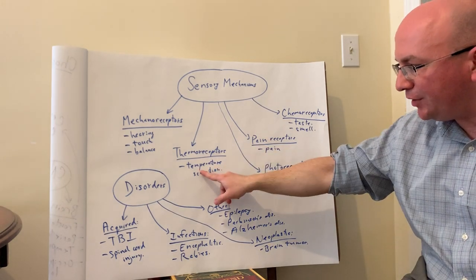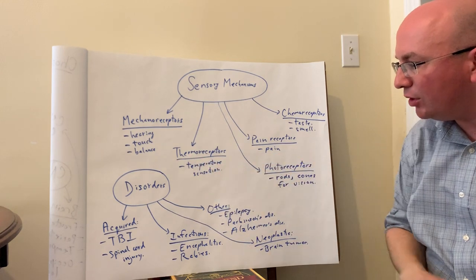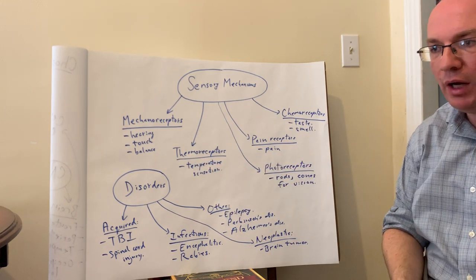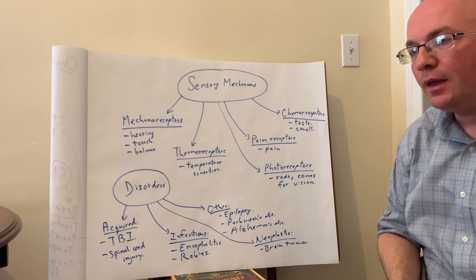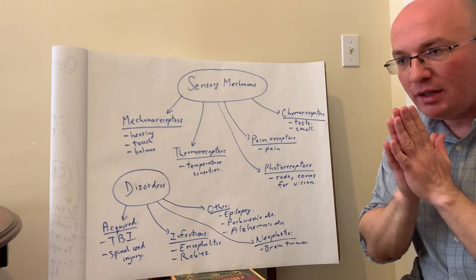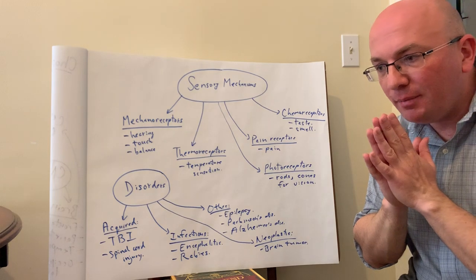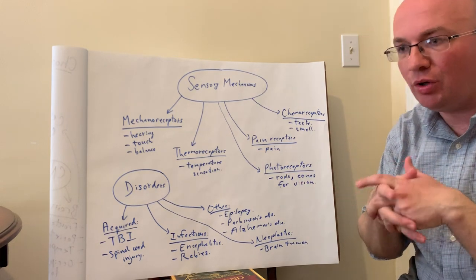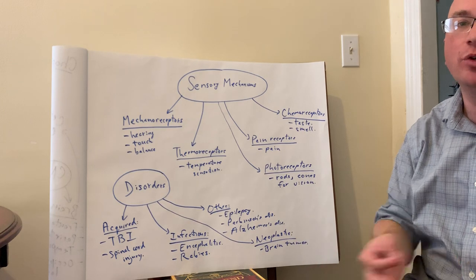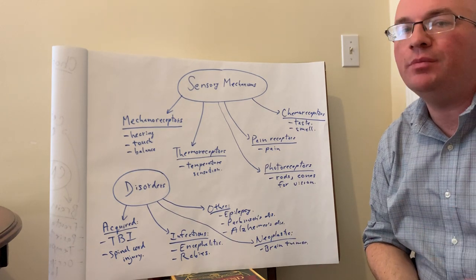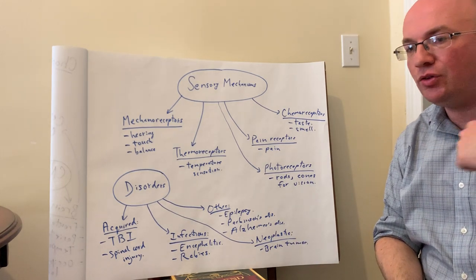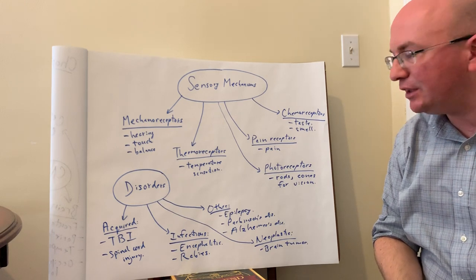Thermoreceptors deal with temperature — 'thermo' means temperature, so temperature sensation. The body cannot have a very precise measurement of temperature. When we touch something very hot or very cold, we don't know exactly what the temperature is, but we know when it becomes painful. This is important information sent to the brain to let us know that something is dangerous.